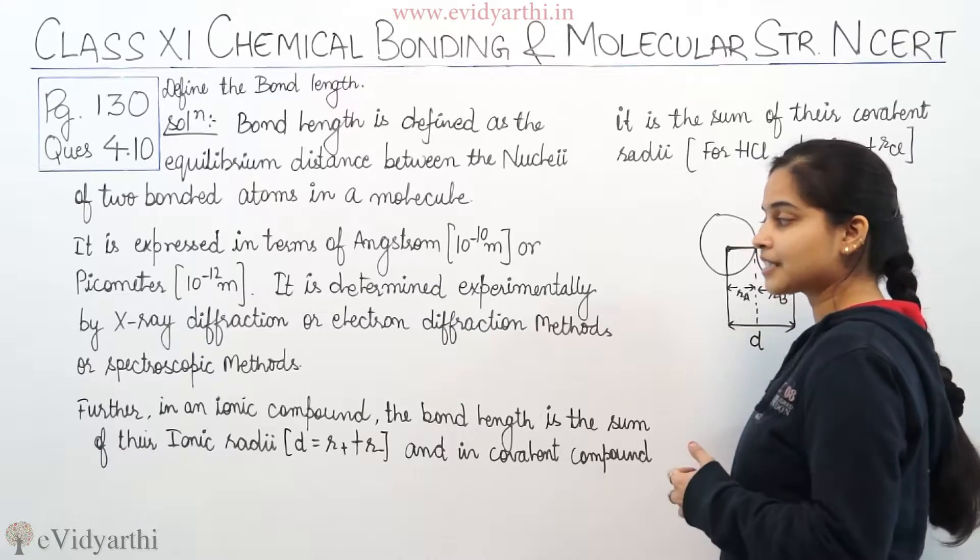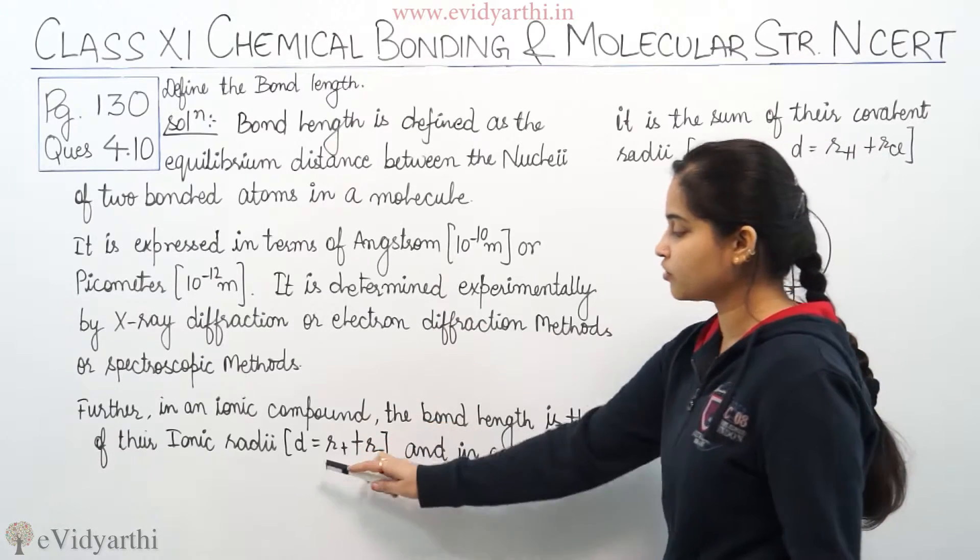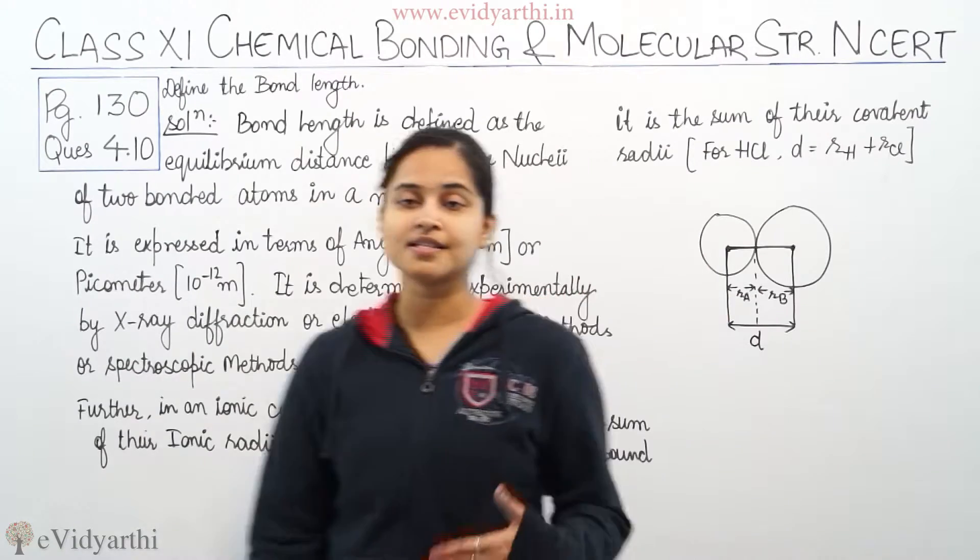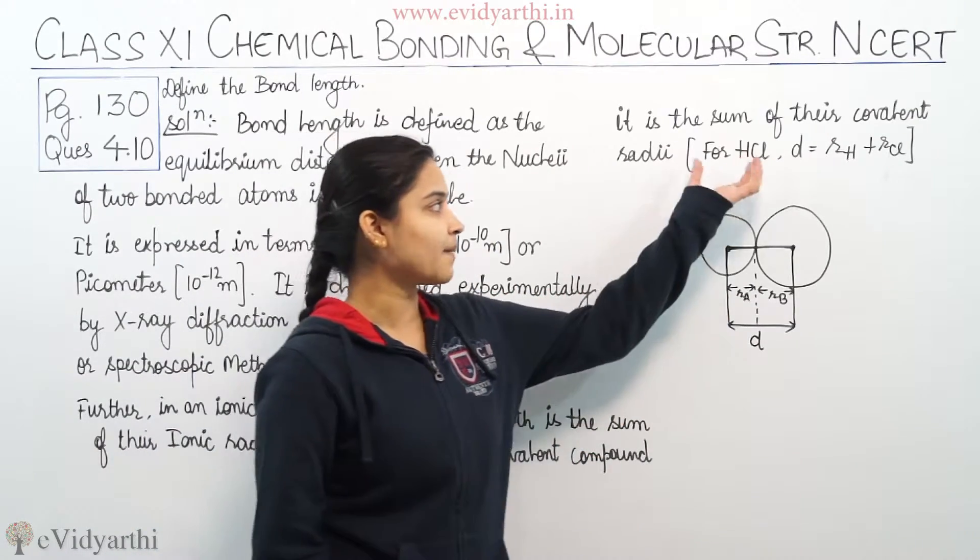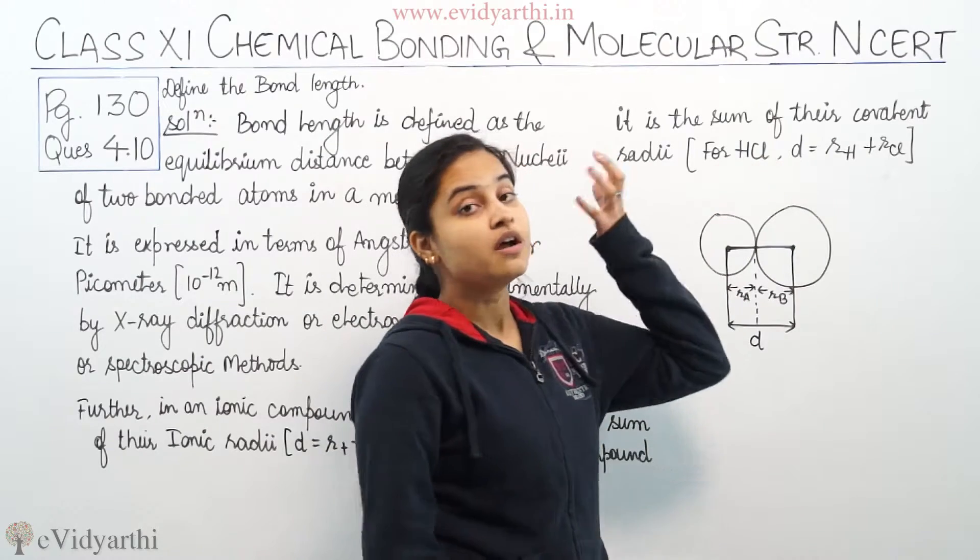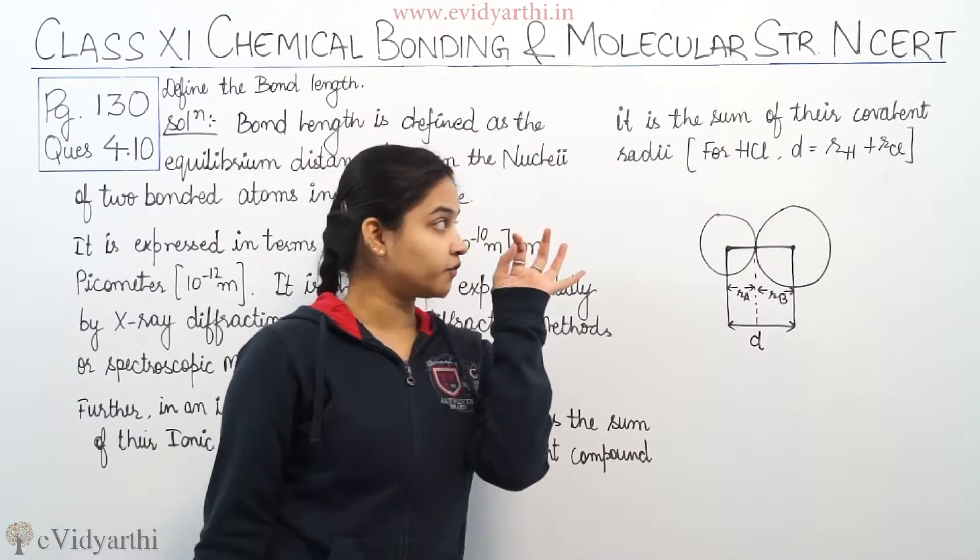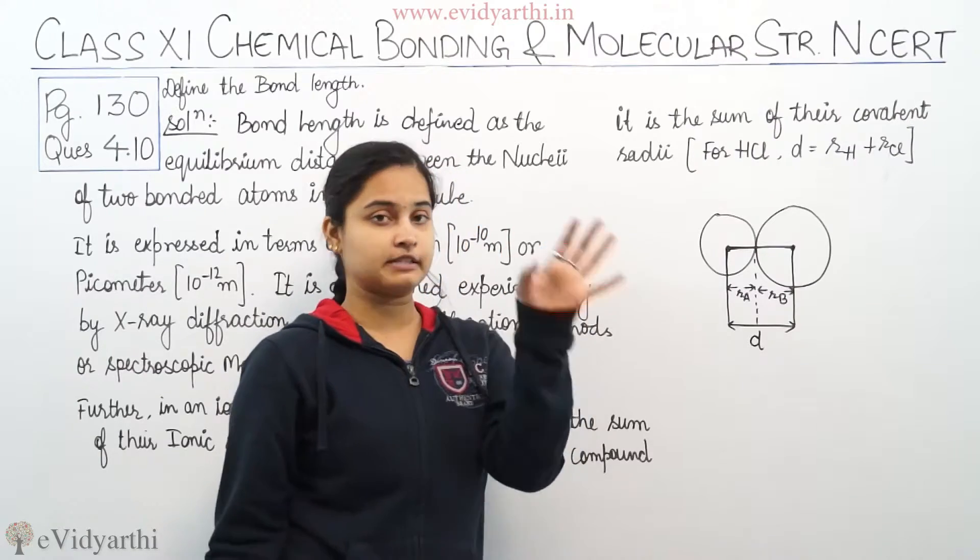In ionic compound, the bond length is the sum of their ionic radii, D = R+ + R-. In covalent compound, the bond length is the sum of their covalent radii. For example, HCl, D = radius of hydrogen plus R of Cl.